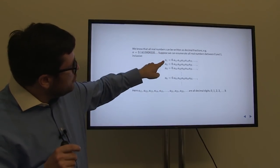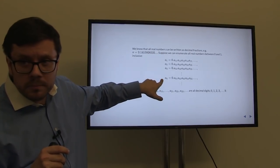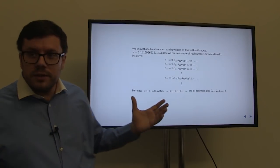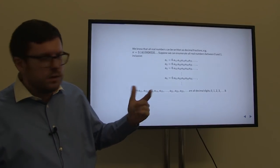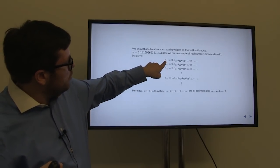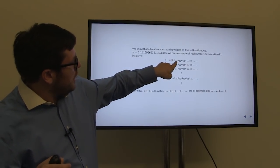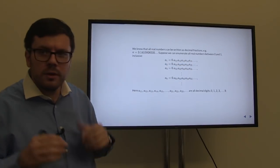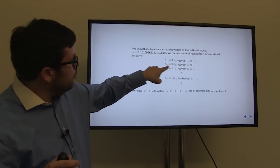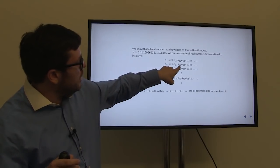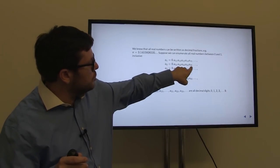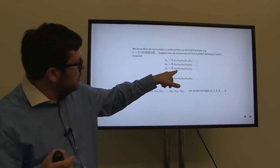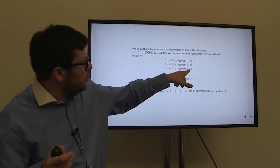Suppose we have enumerated all real numbers between 0 and 1. Then I can say: 1 corresponds to a₁ which is 0.a₁₁, a₁₂, a₁₃, a₁₄, a₁₅...; 2 corresponds to a₂ which is 0.a₂₁, a₂₂, a₂₃, a₂₄, a₂₅...; 3 corresponds to a₃ which is 0.a₃₁, a₃₂, a₃₃, a₃₄, a₃₅... These a's are just single digits from 0 to 9.